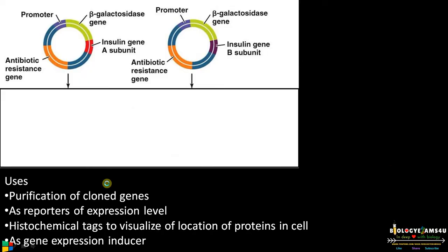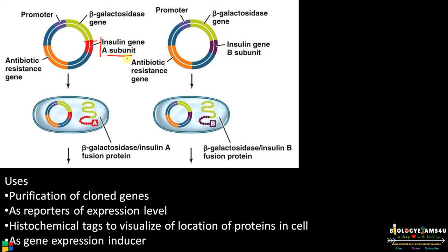Now let us see the other uses of fusion proteins. The first use is in the purification of cloned genes. In making recombinant insulin, the insulin gene is placed beside the beta-galactosidase gene in the vector. As you can see, beside the beta-galactosidase gene there is the insulin A subunit gene, producing a beta-galactosidase–insulin A fusion protein inside E. coli. This fusion protein can be easily purified using affinity chromatography.